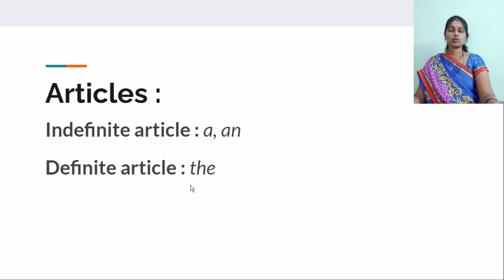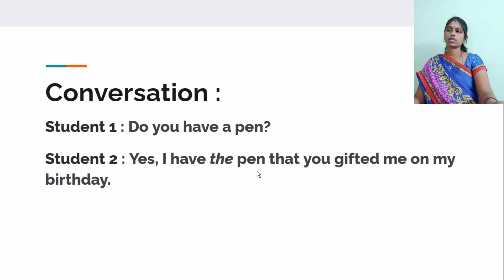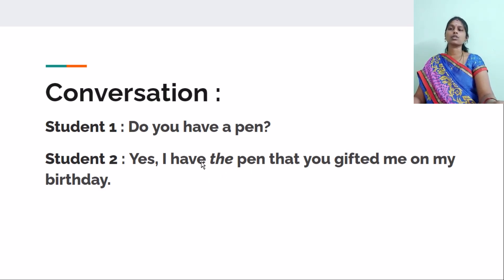The definite article THE is the most frequent word in English, and it is used with nouns whose identity is clear to the listener. For example, Student 1 asked: do you have a pen? Student 2 replied: yes, I have the pen that you gifted me on my birthday. The particular pen gifted by Student 1 is mentioned here, so we use THE before the noun pen.